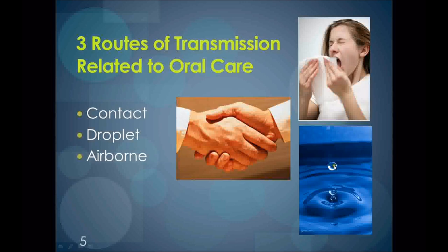Droplet transmission occurs when droplets are generated from the source person, primarily during coughing, sneezing, talking, and during the performance of certain procedures such as oral care. For airborne transmission, this occurs by dissemination of either airborne droplet nuclei — small particle residue about 5 millimeters or smaller in size — of evaporated droplets containing microorganisms, or dust particles containing the infectious agent.